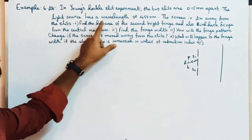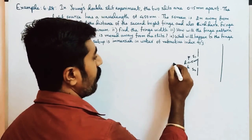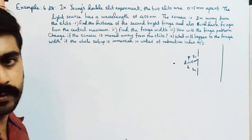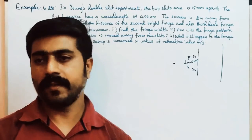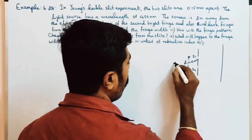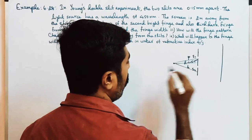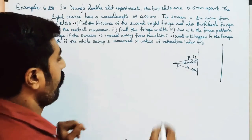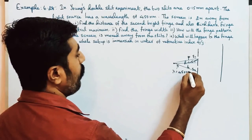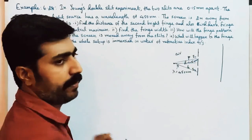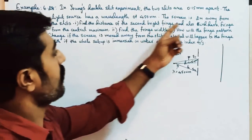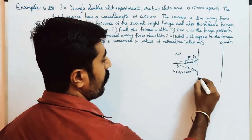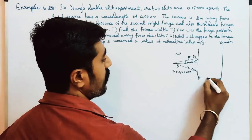The light source has a wavelength of 450 nanometers, and here is the coherent source in an air medium. The screen is 2 meters away from the slits.